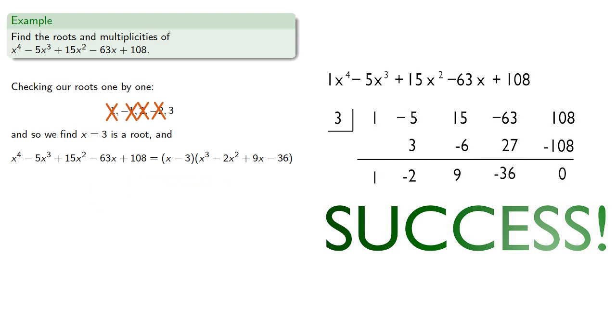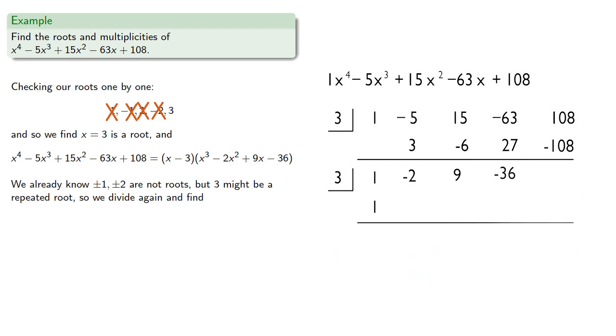Now, we already know plus or minus 1 and plus or minus 2 are not roots, but 3 might be a repeated root. So we'll try dividing by 3 again and we find... And since our remainder is 0, x minus 3 is another factor and the other factor is x squared plus x plus 12. And since x minus 3 appears twice as a factor, x equals 3 is a root of multiplicity 2.